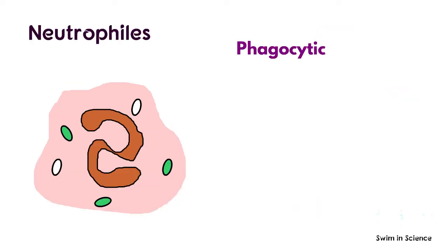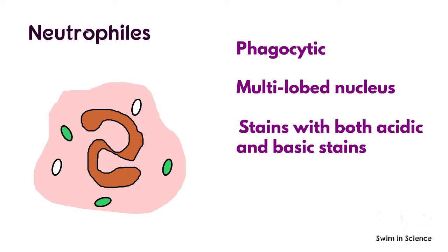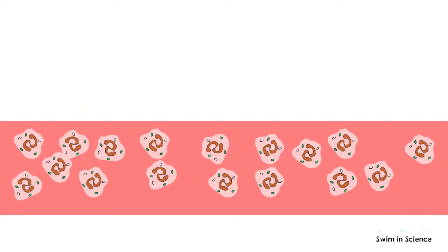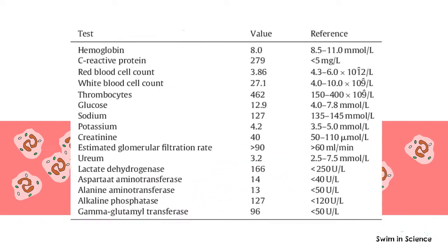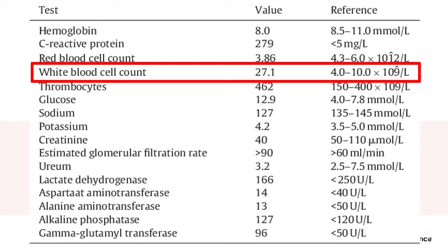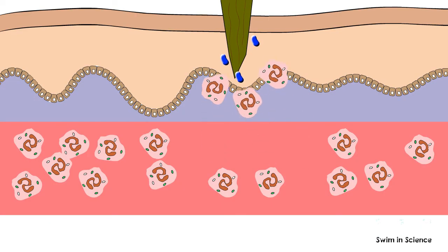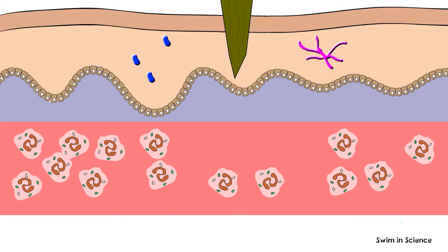Neutrophils are phagocytic in nature. They have a multi-lobed nucleus and stain with both acid and basic stains. Neutrophils are the most abundant leukocytes and are short-lived. They increase in number in the bloodstream during infection and are responsible for the elevated white blood cell count seen with some infections, which is a well-known clinical indication. Neutrophils are the first cells that act at the site of tissue damage to eliminate pathogens by phagocytosis, and are mainly involved in the elimination of bacteria and fungi.